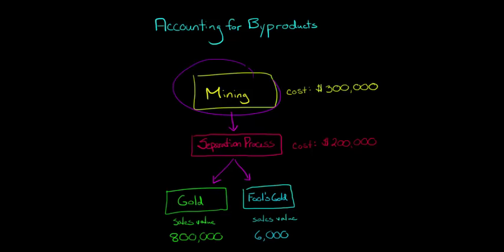Let's say that you start a mining operation and it costs you $300,000 to mine some gold and there's a separation process involved because as you're mining the gold you get rocks and pebbles, different things that you have to weed out to get to the gold and that costs $200,000 to do that process.